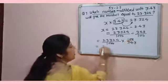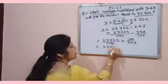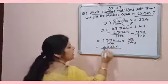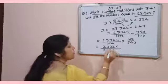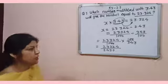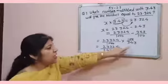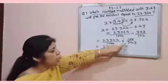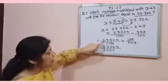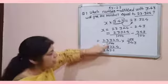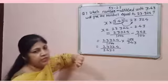Now 23.324 divided by 3.430. Now you can check that either these two are divisible or not. You know these two are divisible because the last digit is 0. You can cancel them.